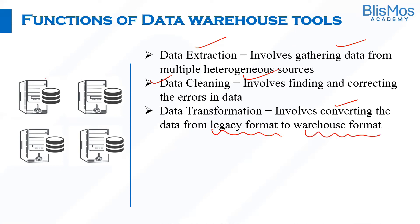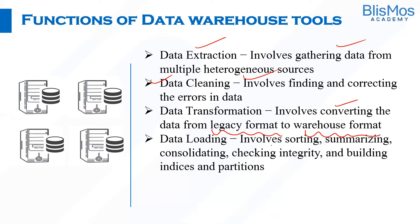Since we are getting data from multiple sources, the data warehouse requires data in a particular format so that you can homogenize data coming from heterogeneous sources. For that to happen, the data goes through transformation to conform to the standards or formats of the data warehouse. Next, data loading involves sorting, summarizing, consolidating, checking integrity issues, and building indices and partitions for fast access.